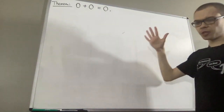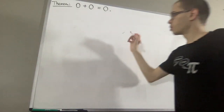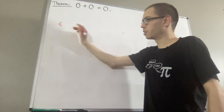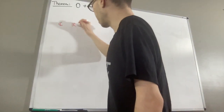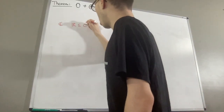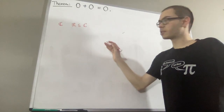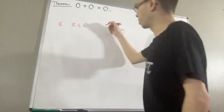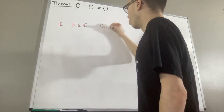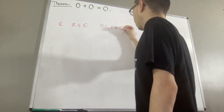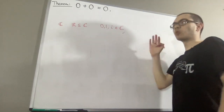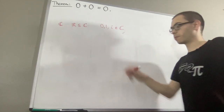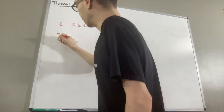So let's remind ourselves what we're working with. We have a set C, called the set of complex numbers. And we have a subset of the complex numbers, R, called the set of real numbers. And we're given three elements of the complex numbers: zero, one, and i. We're also given two binary operations on the set of complex numbers: addition and multiplication.